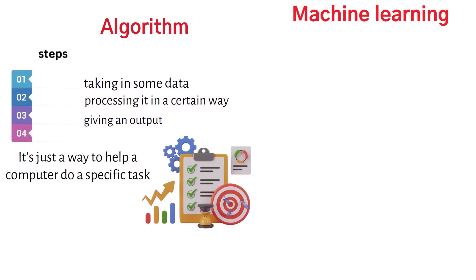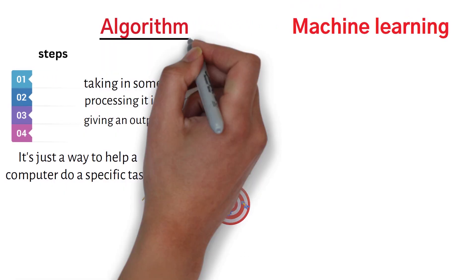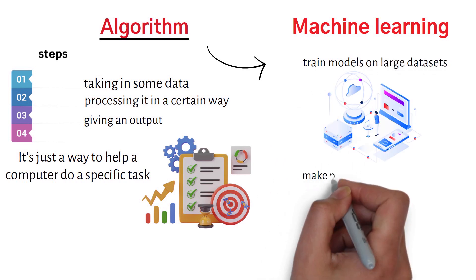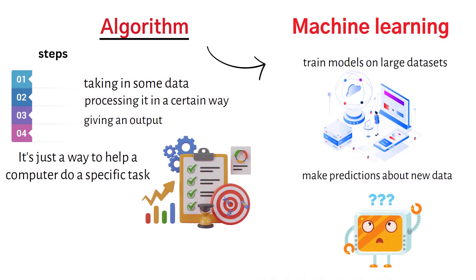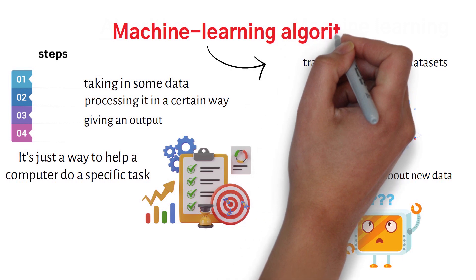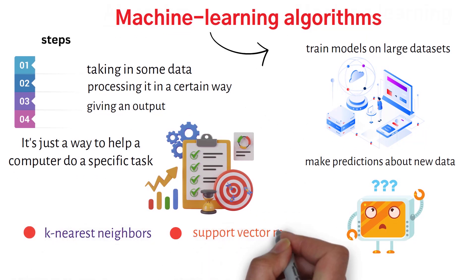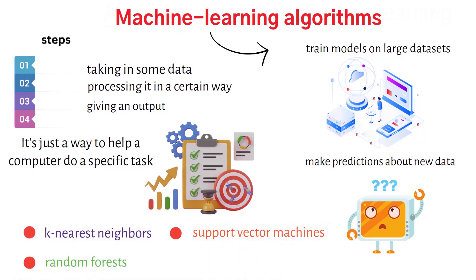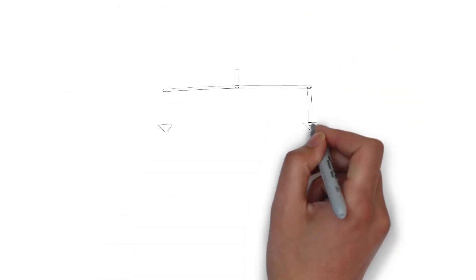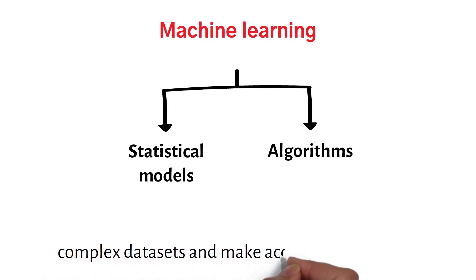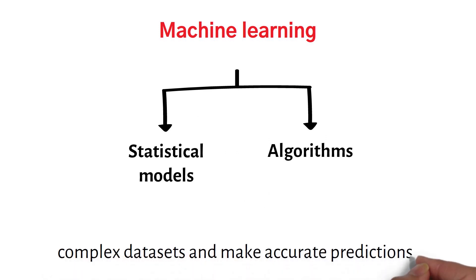In the context of machine learning, algorithms are used to train models on large datasets and make predictions about new data. Some common machine learning algorithms include k-nearest neighbors, support vector machines, and random forests. Both statistical models and algorithms are essential components of machine learning and are used to make sense of complex datasets and make accurate predictions.